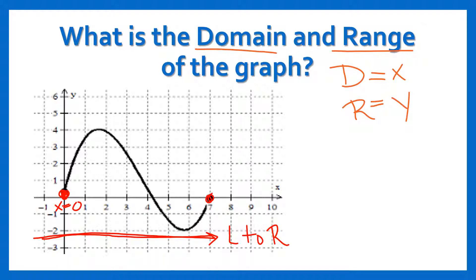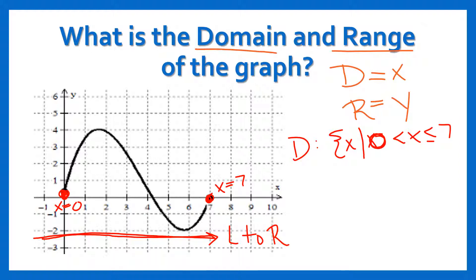As you move through this line you want to find the other end, where x is seven. So your domain, which can be written a lot of different ways — one fancy way is to say 'x such that x is between zero and seven,' and it can include those two because they're connected in the graph. Sometimes it's just written as all numbers between zero and seven. It depends on how your teacher or the test has it written.